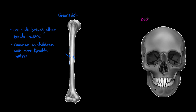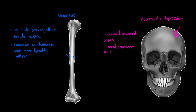The last fracture type is called a depressed or depression fracture, and it's almost always seen only on the skull. If we look at the skull here and imagine being hit over the head with something, the bone is going to be depressed or pressed inwards. The bone is pressed inward, resulting in a break that looks similar to dropping something heavy on concrete and causing it to split.